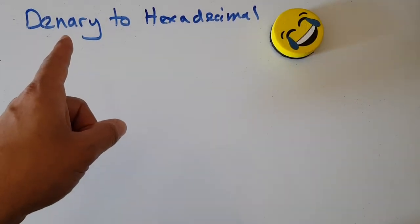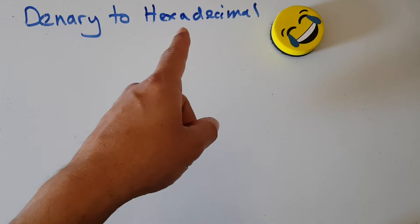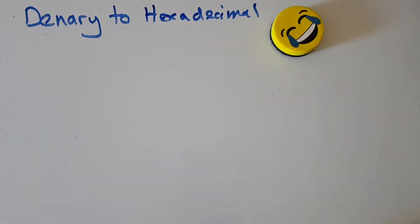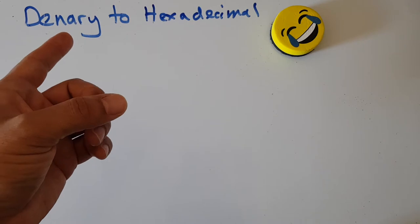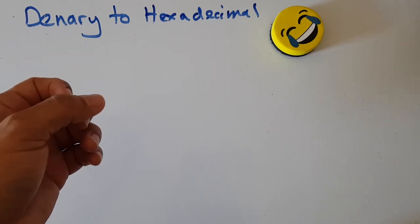This video is about converting denary or decimal to the hexadecimal number system. Denary or decimal, as we know, is just normal counting: one, two, three, four, five, six, seven, and so on. That number system is called denary or decimal.